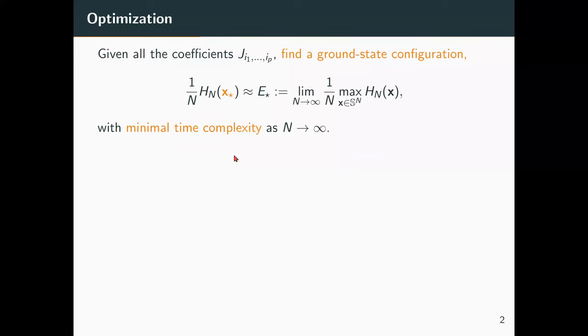And we want an algorithm that produces such a point with minimal time complexity. Of course, if you don't care about that, if you just search for the point by sampling the function, to get within an error of epsilon, it would take you exponential time. And what I'll show you is that in some models, you can optimize in polynomial time. Now, let me define p_max as the maximal value of p, such that gamma_p is not zero, because the number of coefficients that you use to define H_N is roughly of the order of N to the p_max.